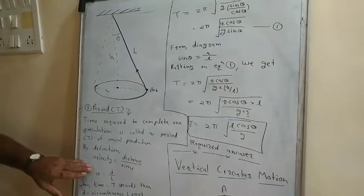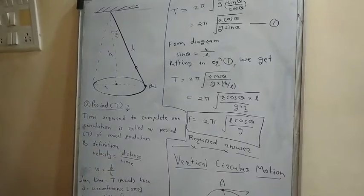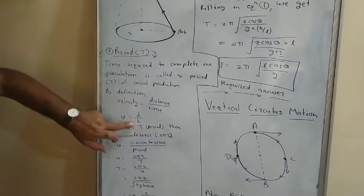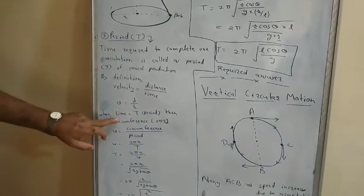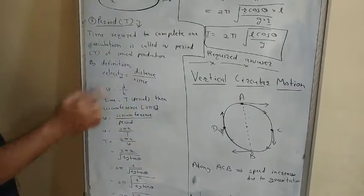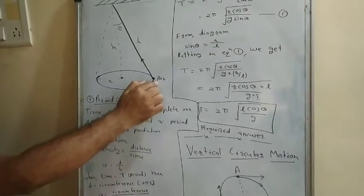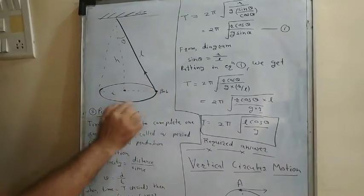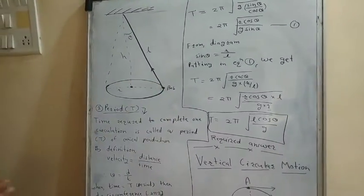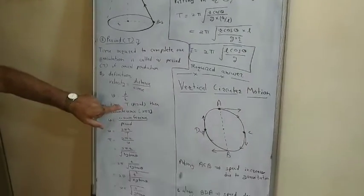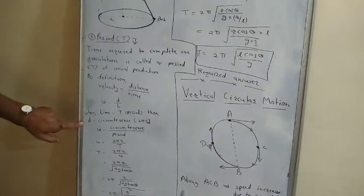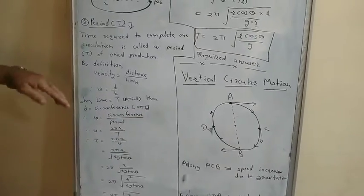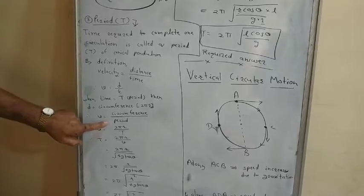By definition, velocity v equals distance upon time, i.e., v = d/t. In periodic time capital T, the bob completes one full circulation, so the distance covered is the circumference. When we write capital T for the period, the distance covered is the circumference, given by the formula 2πr.